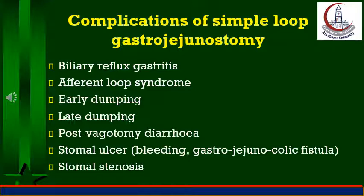Afferent loop syndrome is caused by intermittent mechanical obstruction of an unusually long afferent loop after Billroth 2. Symptoms include early postprandial distension, pain, and nausea, which are relieved by vomiting of bilious material not mixed with food. The treatment is good drainage of the afferent loop by converting the loop gastrojejunostomy of Billroth 2 to a Roux-en-Y anastomosis.